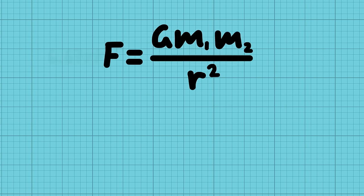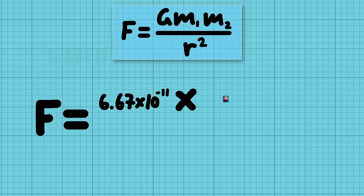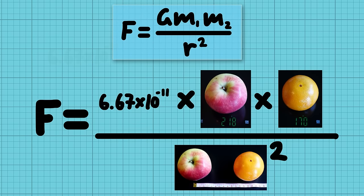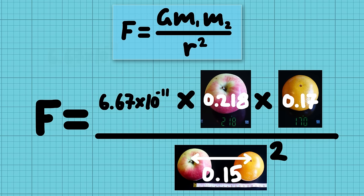Now you basically know how to use this formula. If you have the masses of any two objects and the distance between them, you can plug in the numbers and calculate the force of gravity between them.